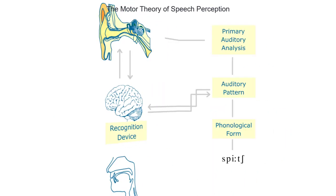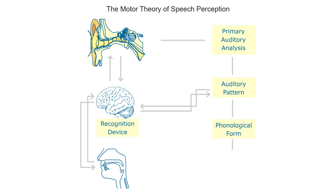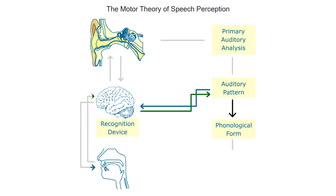And this is how it works. At the first stage, the ear amplifies the incoming signal and transmits it to the auditory nerve. During a primary auditory analysis, the signal is filtered — that is, non-speech components are separated from speech. Then, from the cleaned signal, auditory patterns such as formant frequencies are extracted and matched with the internal patterns.